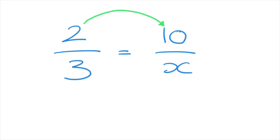And looking at this, it doesn't take us too long to see that if we multiply 2 by 5, then it will equal to 10.